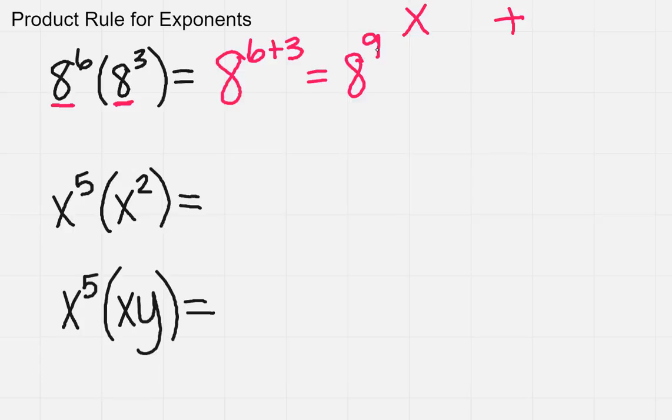Again, got a second example here. I noticed that the bases are the same. They're both x's, so I'm going to have x. And this time I have a 5 plus 2. So I'm just going to add those together and 5 plus 2 is 7.